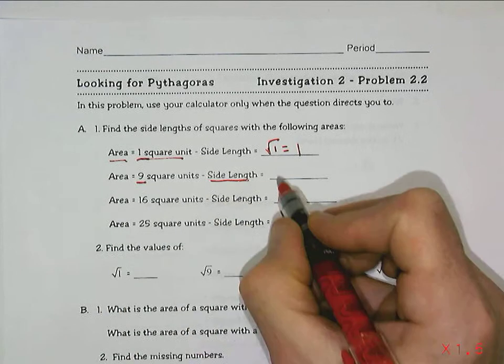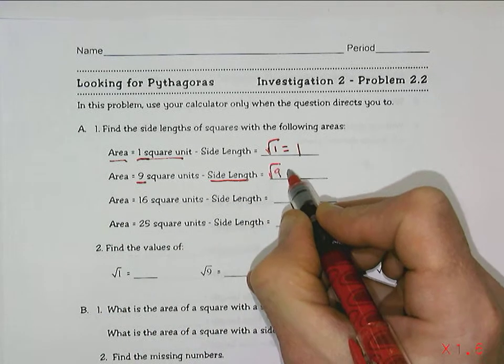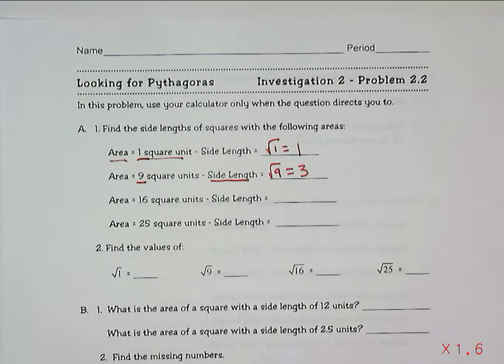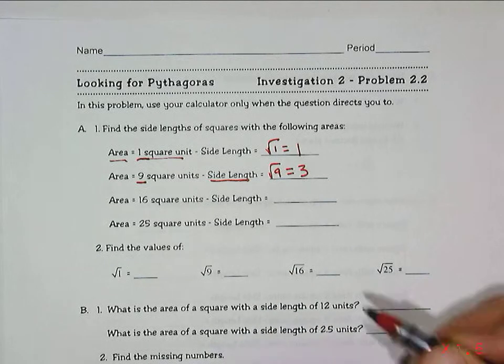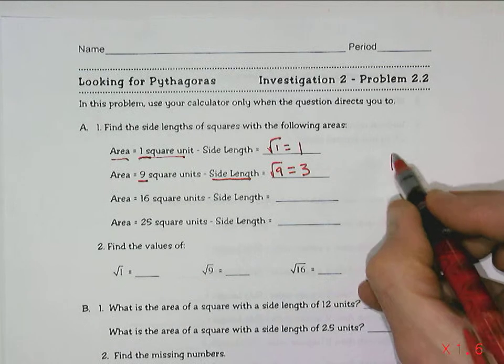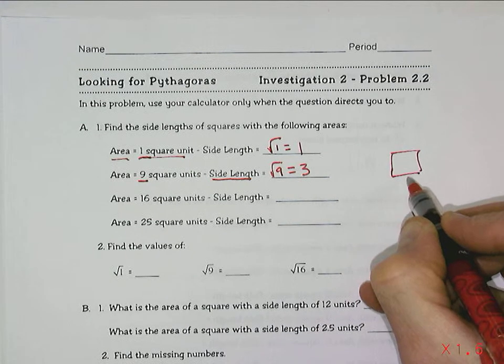If the area is 9, the side length has to be the square root of 9, which is 3. 3 squared is 9, the root of the square. If I were actually to look at the square, its side lengths would have to be 3.